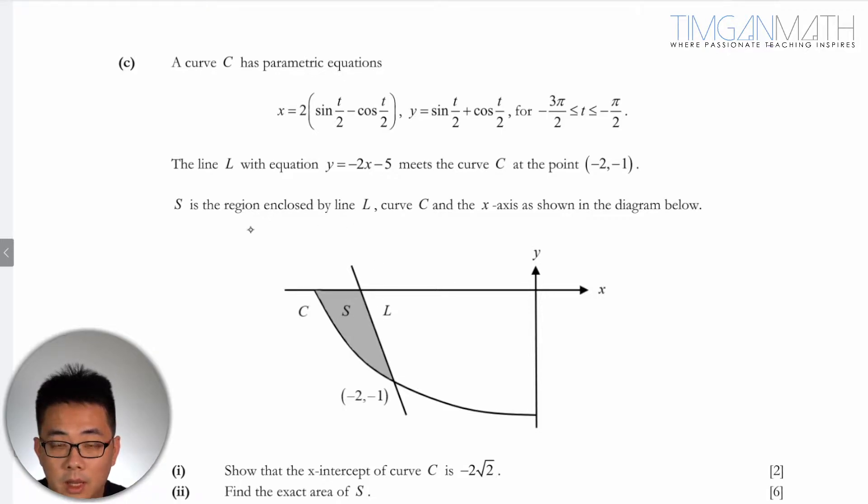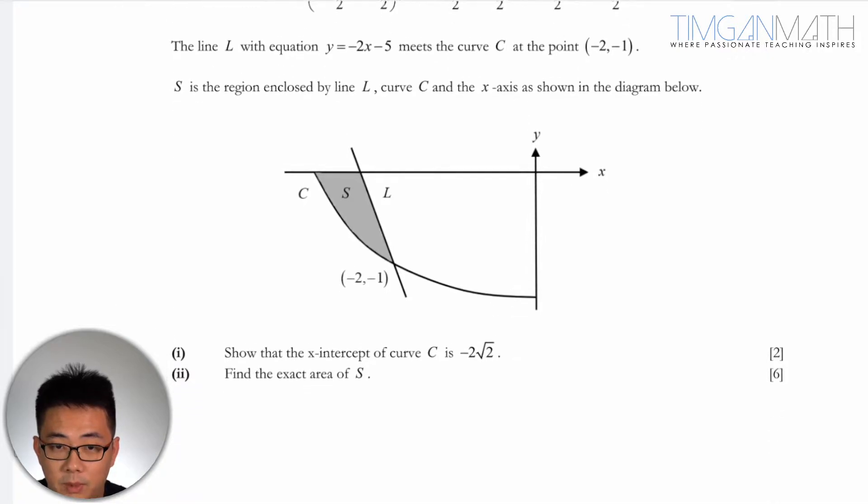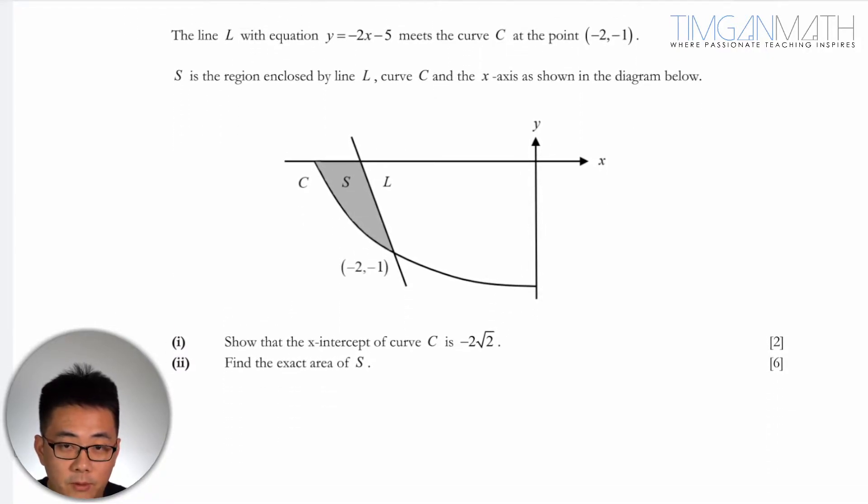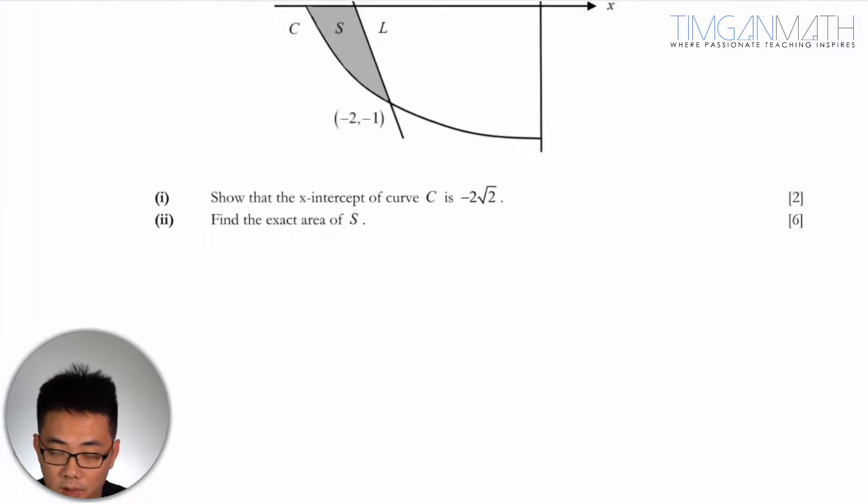The region S is the region enclosed by line L and C, and the x-axis as shown in the diagram below. Show that the x-intercept of curve C is -2√2. I think this is pretty straightforward.